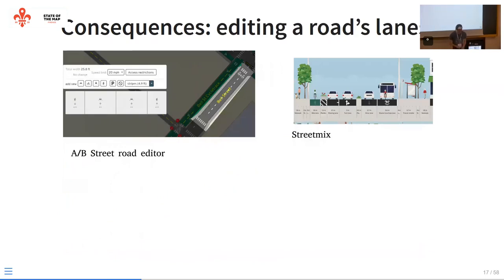Another consequence of the OSM representation: if you have interfaces that let you edit the lanes on a particular road, this breaks down. On the right is a really awesome open source tool called StreetMix that inspired similar user interfaces, where you see a cross-section of one road and can drag the lanes around and adjust the width. AB Street also has an editor based on this approach. But if you can see on the left, we're editing only the main road at a time, and there's a cycle track right next to it that you can't edit at the same time because it's just a different object in the representation.